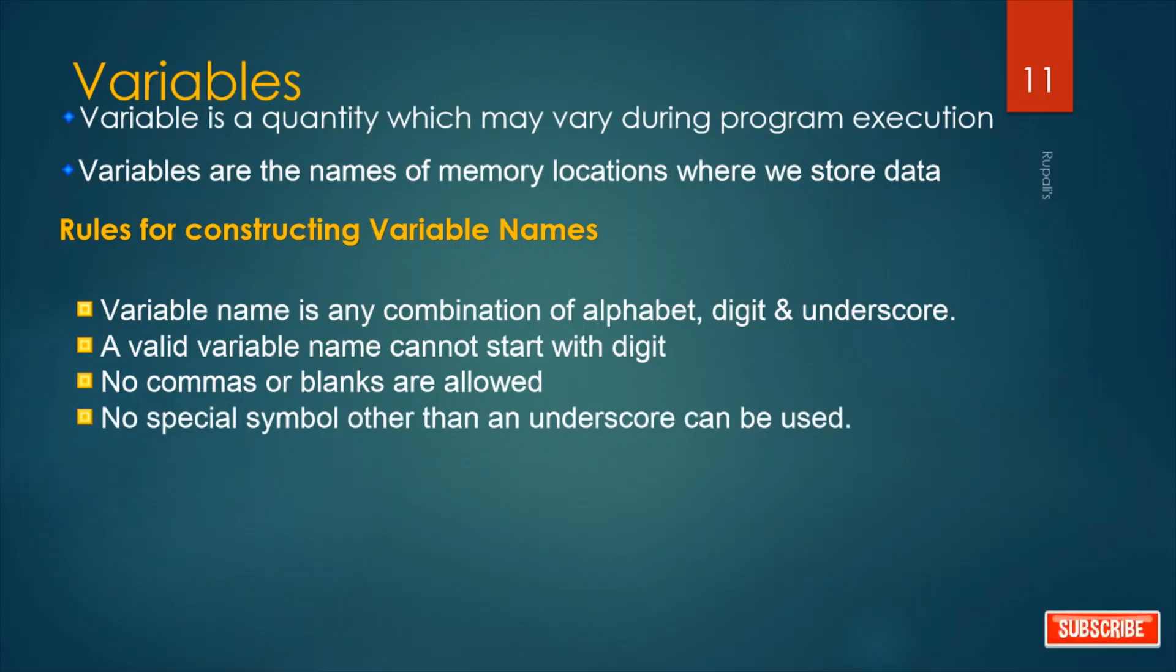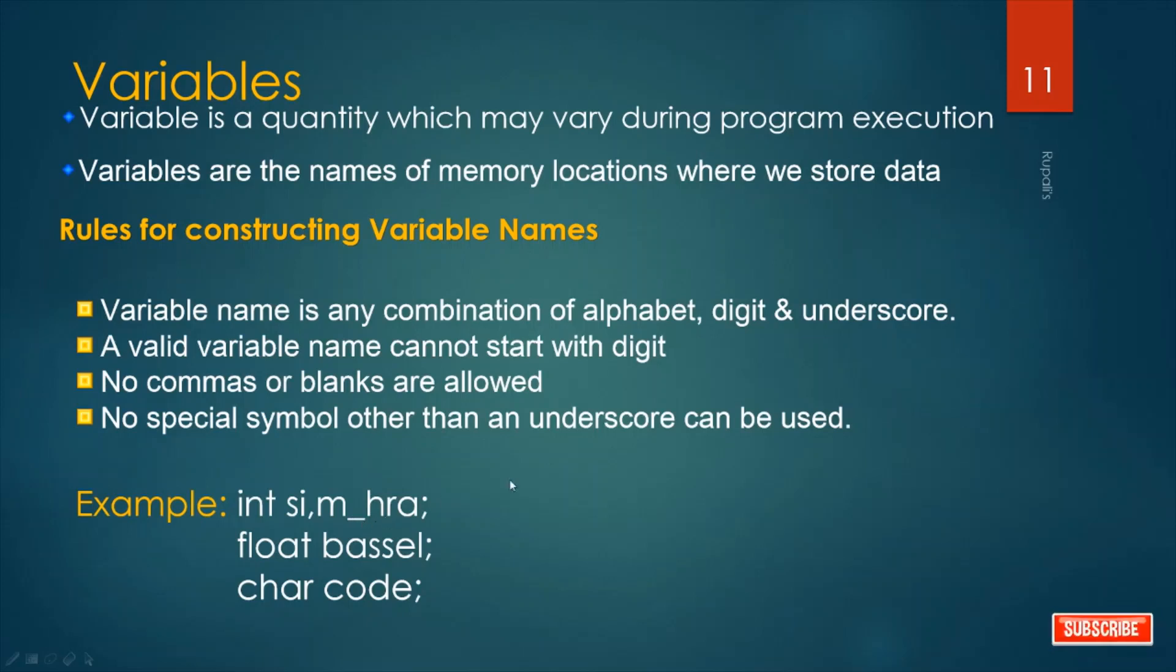No special symbol other than underscore can be used. You can't use symbols like @ or = in case of variable names. Always no special symbol is used except underscore. When I declare int si, it's okay. But int aim_hra - underscore is allowed here.